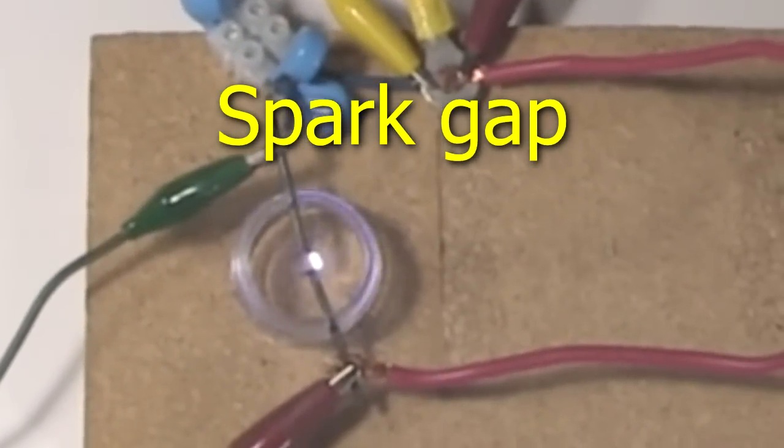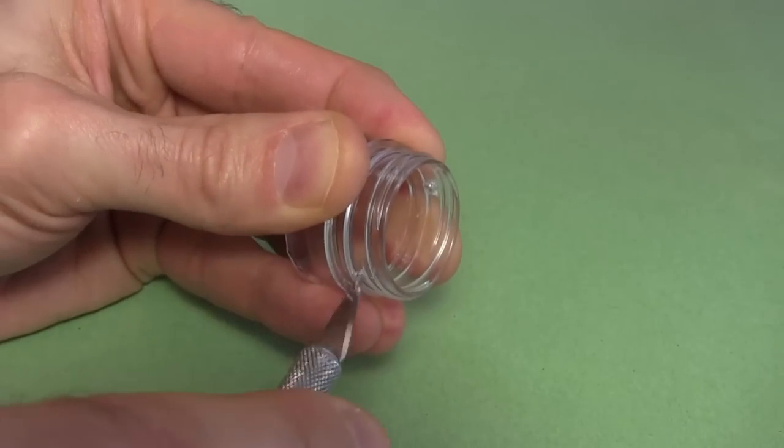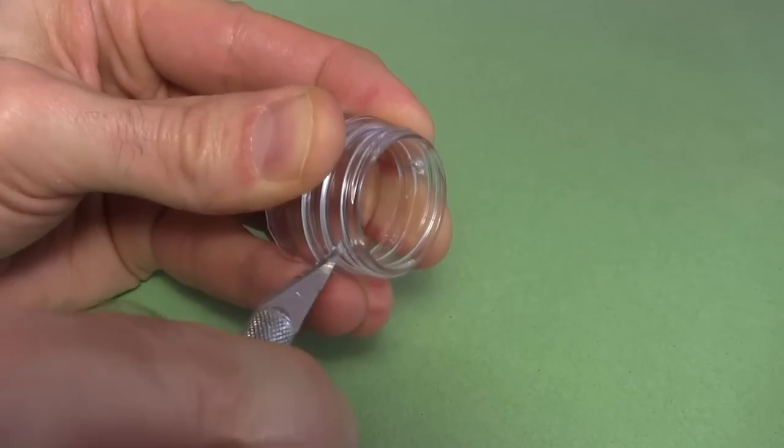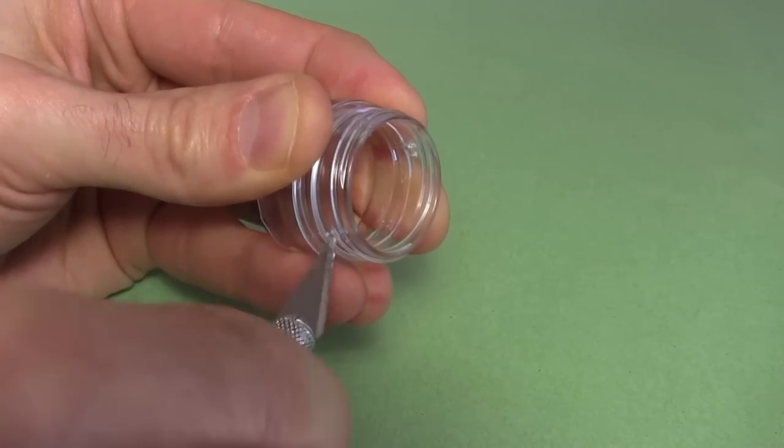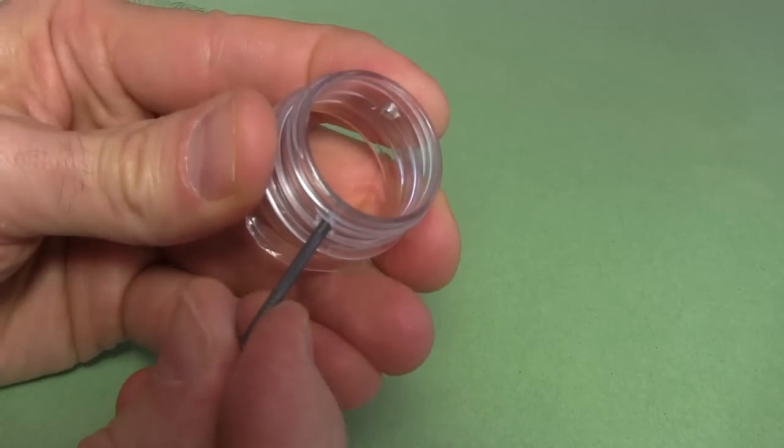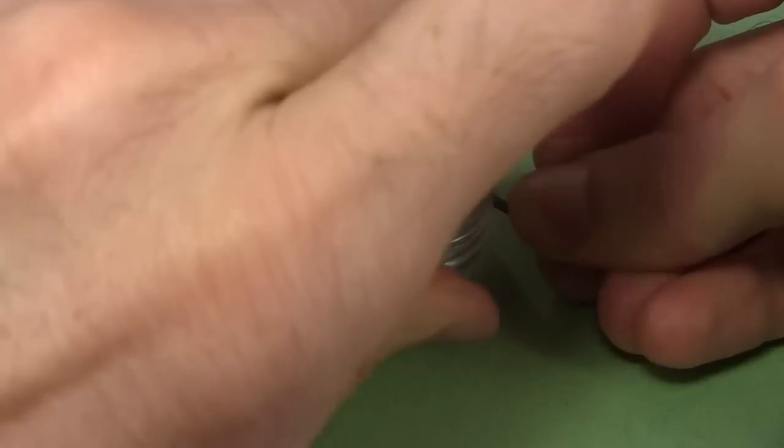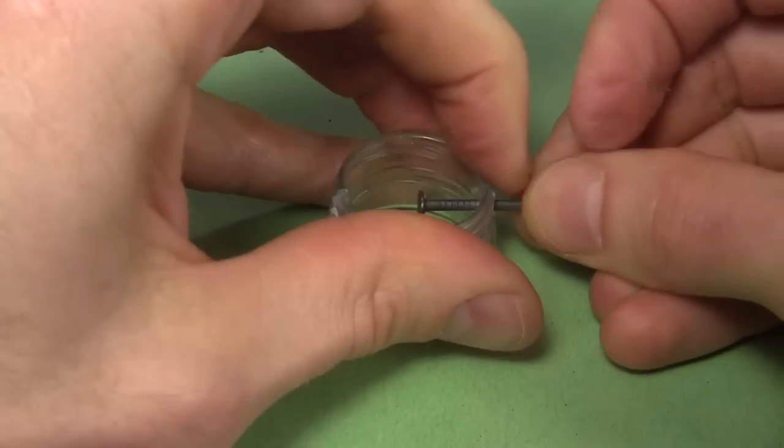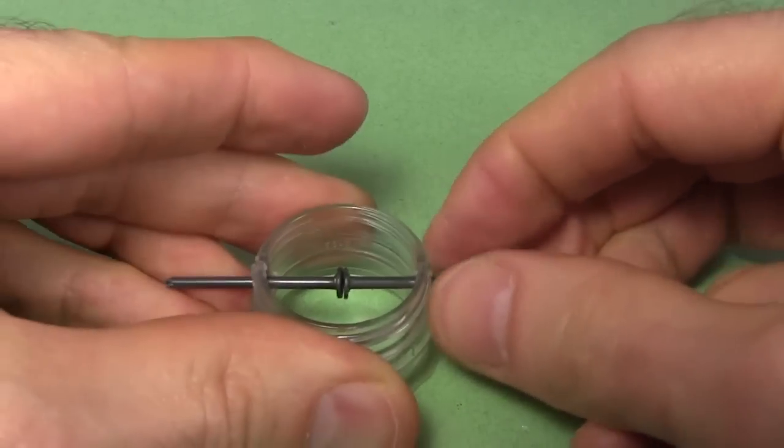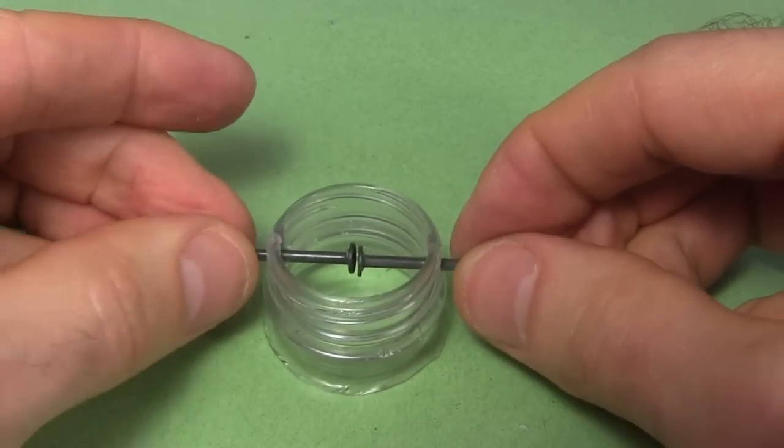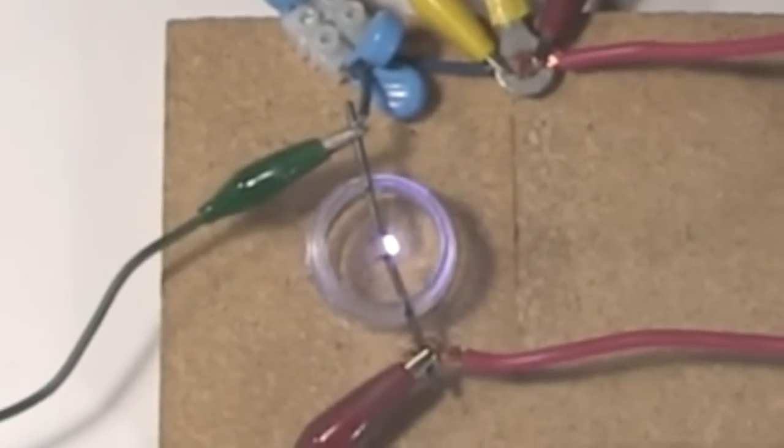For the spark gap, I cut the top off a plastic soda bottle and I make two holes on either side, being very careful not to stab myself. I'll be fitting some nails in, and I want the fit to be fairly tight. Then I cut some slots down the side. That's so that I can put the nails in with their flat heads facing each other. Notice that the gap between them is easily adjustable. You want the spark gap to be in air as much as possible, like this, so that the surrounding air can help keep it cool.